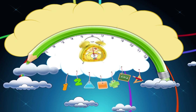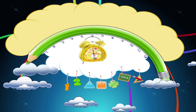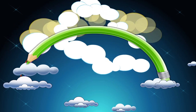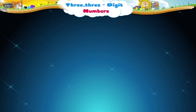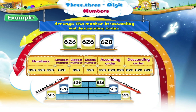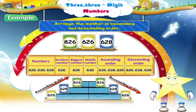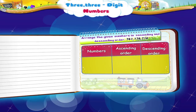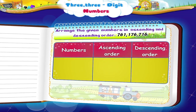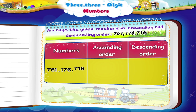Ascending and Descending Order of Four Three-Digit Numbers. Hi Starry! You have already learnt to arrange numbers in the ascending and descending order. Let us check if you remember it. Please arrange these numbers in the ascending and descending order.